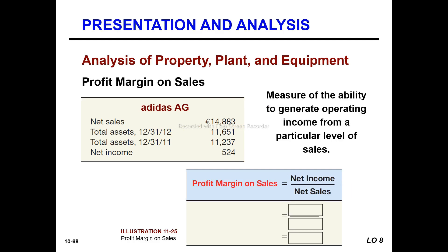Profit margin on sale measures the ability to generate operating income from a particular level of sales. The formula is: Net Income divided by Net Sales. This ratio tells you how much profit is generated from each dollar of sales.